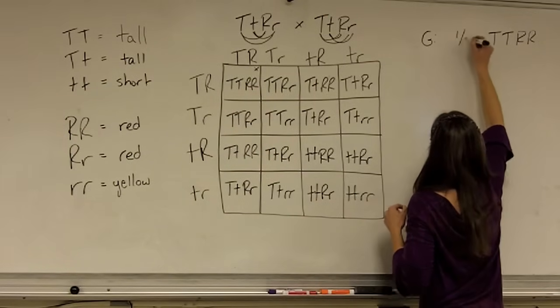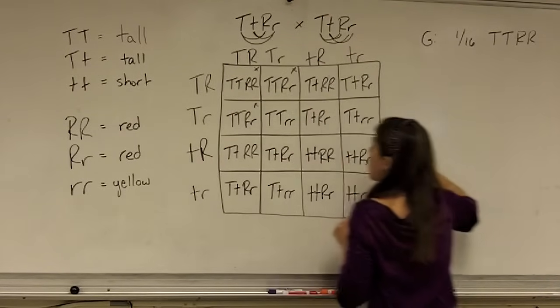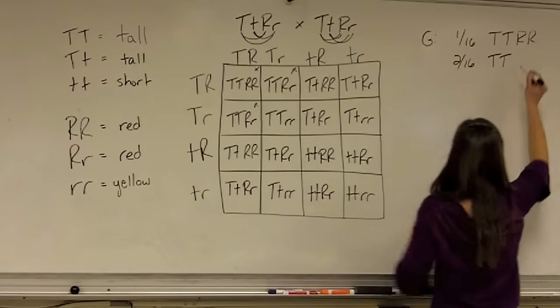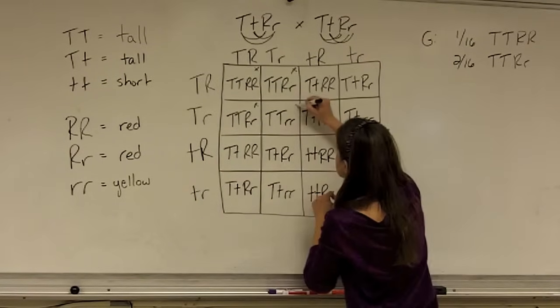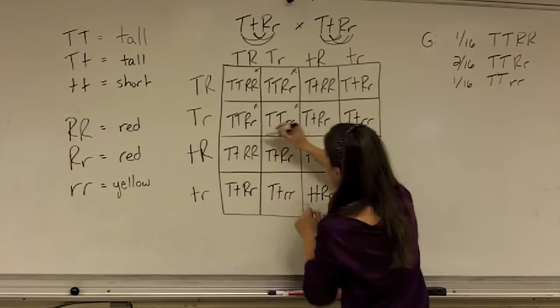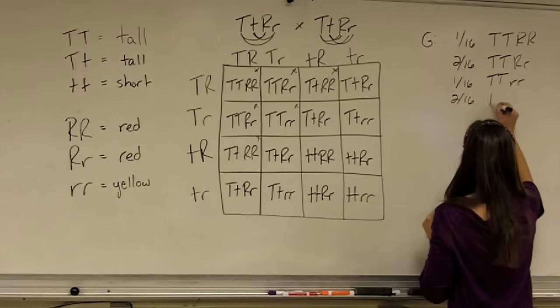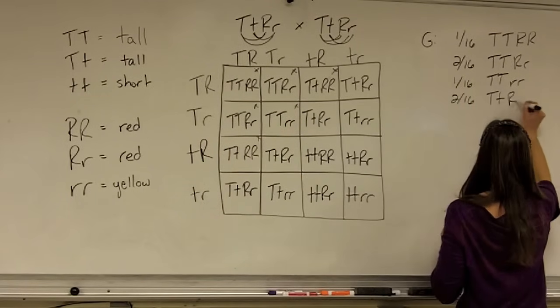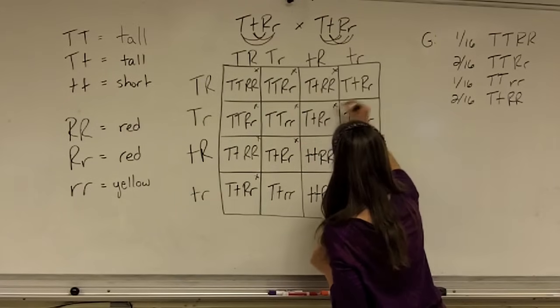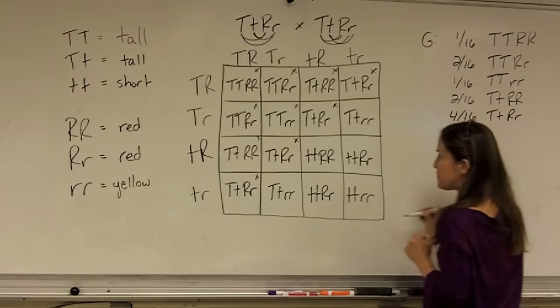I can work my way down and to the right and see that there are two possible combinations out of 16 of big T, big T, and big R, little R. One possible combination of big T, big T, little R, little R. I'm going to work my way out here to see that there are two combinations of big T, little T, and big R, big R. And then I get a nice pattern here all the way across diagonally, four sixteenths, big T, little T, big R, little R.